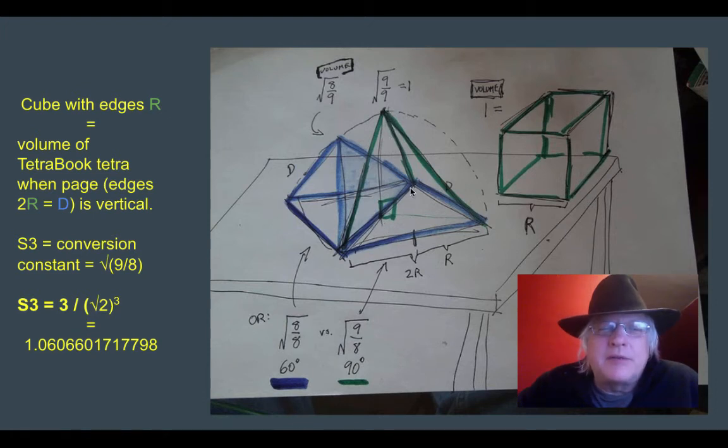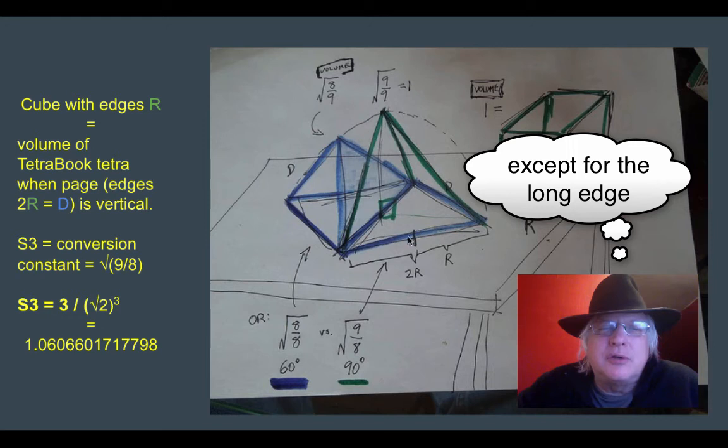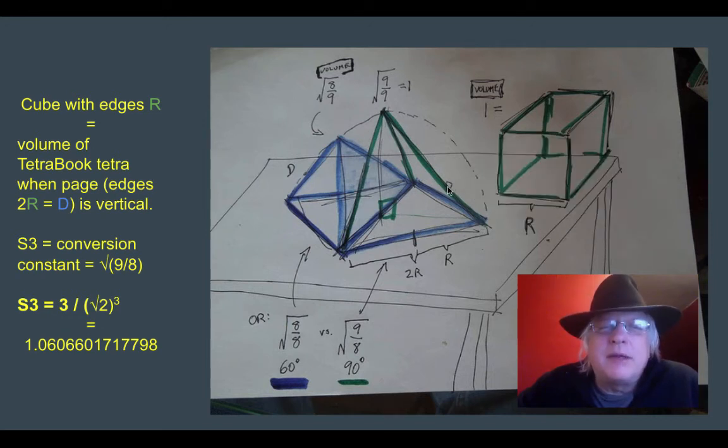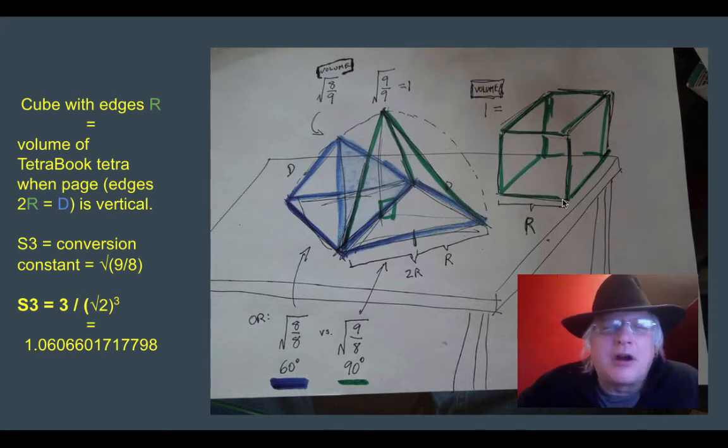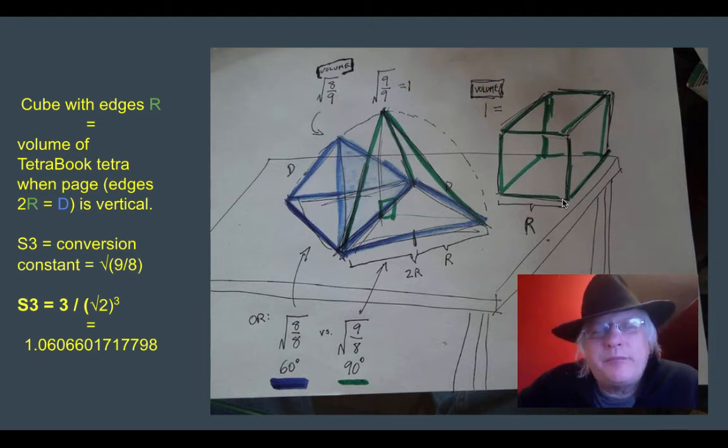But that's not supposed to scare you off in math. In math, you're supposed to run towards such things with open arms, excited. Oh my God, something new. Something interesting. Like, did you know that a cube of all edges R has the same volume as a right tetrahedron with all edges 2R?